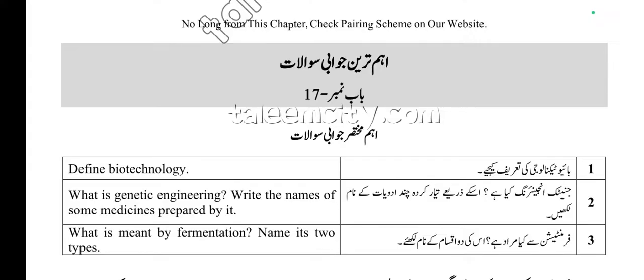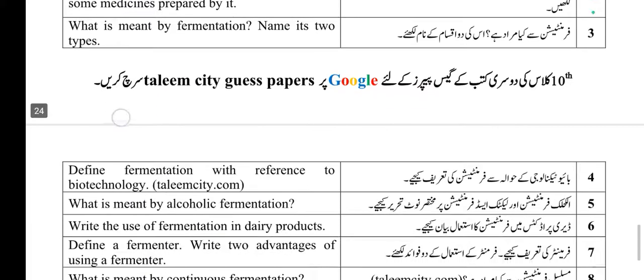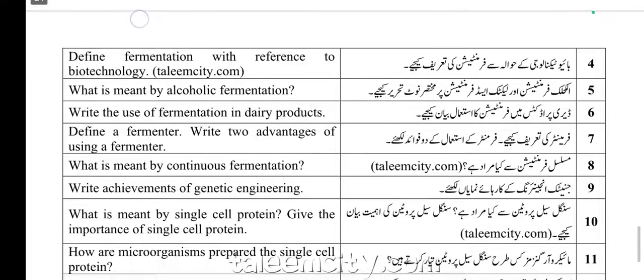First of all, we'll check out chapter 17 — Biotechnology. We have the short question answers about biotechnology. I'm sharing my screen with you. You have to note: fermentation — name its two types, write the names of both types. Also important short questions: alcoholic fermentation — define it, fermenter and its advantages — very important short question.